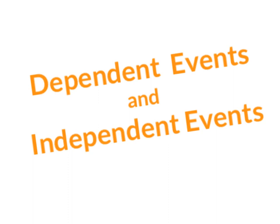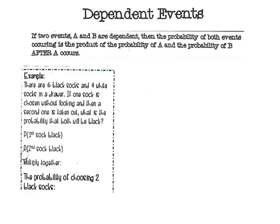This video is going to go over dependent and independent events. We're still working with probability, and we're going to look at two different types of events. Make sure you're on the page that says dependent events. We're going to look at the definition of dependent events, and then we're going to do an example together.